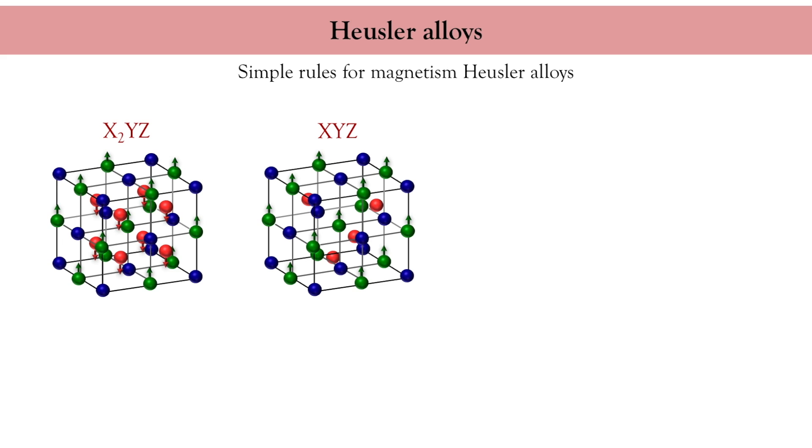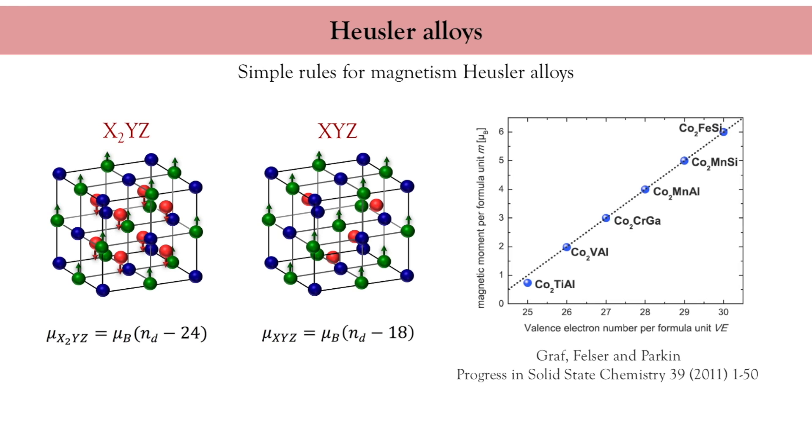In the particular case of half Heusler compounds, only manganese and rare earth-based alloys display localized magnetism. What is particularly interesting to us is that the magnetic moment of both Heusler and half Heusler alloys is simply proportional to the number of valence electrons. They are on the left part of the Slater Pauling diagram and display localized magnetism.